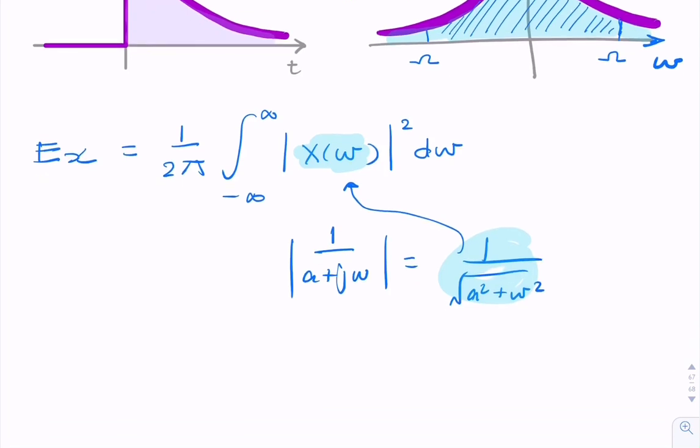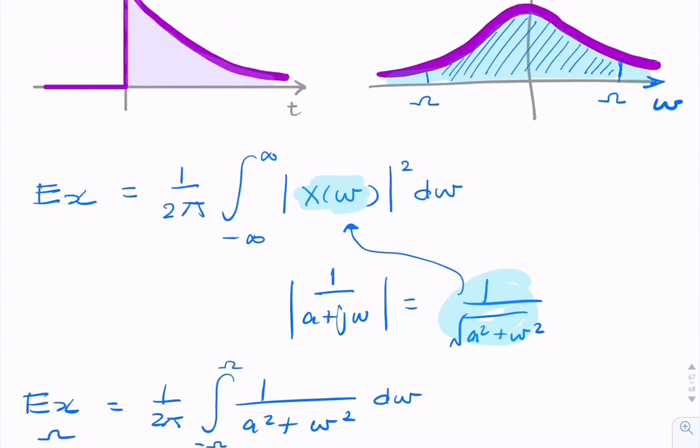So we can then say the energy is 1 over 2 pi, the integral of 1 over (a squared plus omega squared) d omega. Now, if I change my limits from minus omega to omega, this becomes the energy that I'm interested in. That is, this energy here within the 99% containment bandwidth.